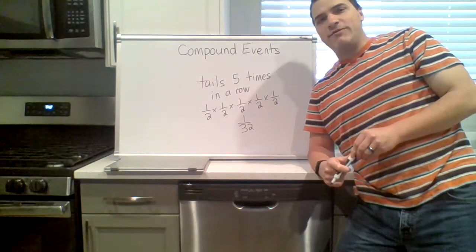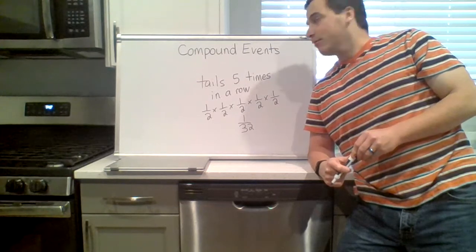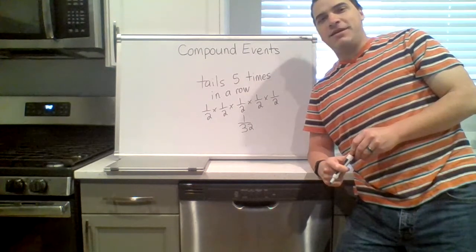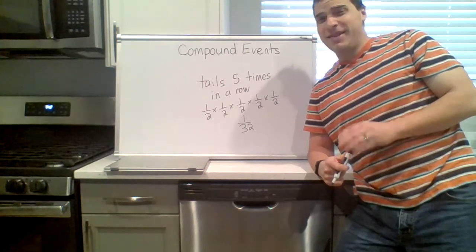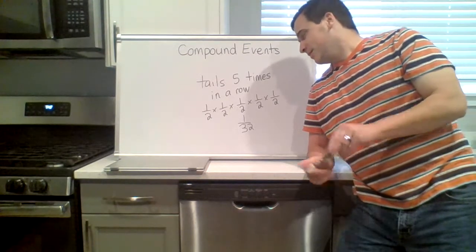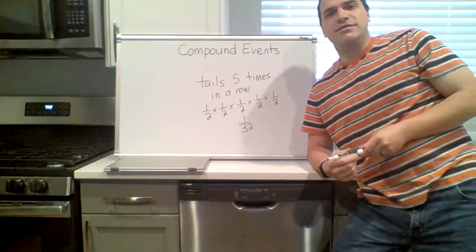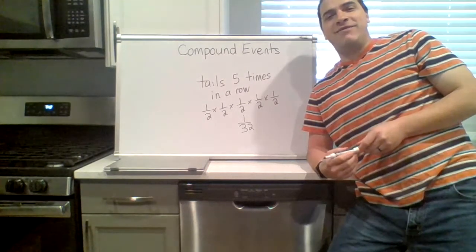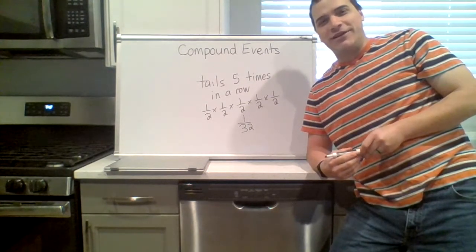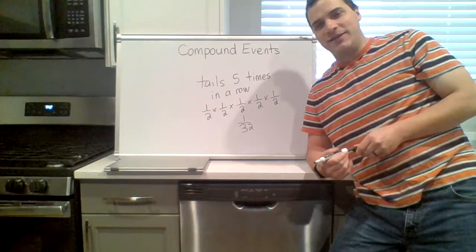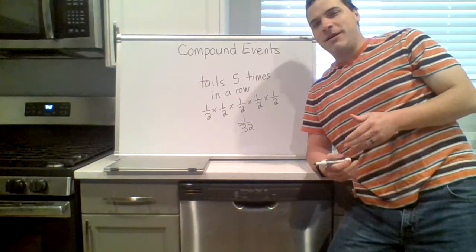Now it's important to understand what one in thirty-two means here. If your friend flipped the coin five times and it was tails each time, would that be weird to you? Well, one in thirty-two is not that unlikely. I mean, you won't expect it, if it keeps happening over and over again you might think maybe you're doing something weird.